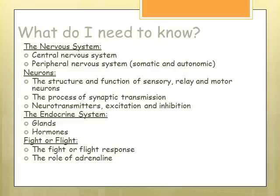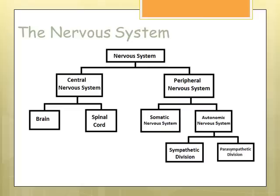For biopsychology you need to know about the nervous system, neurons, endocrine system, and fight or flight. The nervous system is broken down into two key branches: the central nervous system and the peripheral nervous system. The central nervous system comprises the brain and spinal cord. The brain is the centre of our conscious awareness, and our cerebral cortex distinguishes us from animals with higher functioning skills. The spinal cord passes information from the central nervous system to the peripheral nervous system, though sometimes it bypasses the brain in a reflex reaction — such as automatically removing your hand from something very hot.